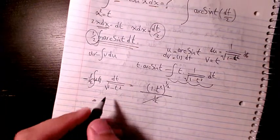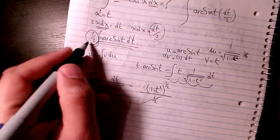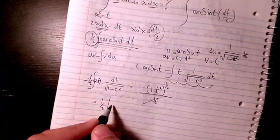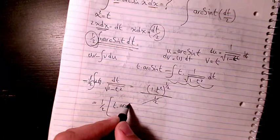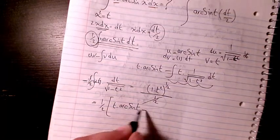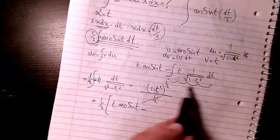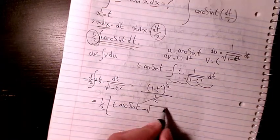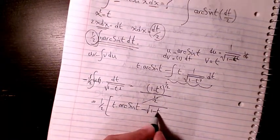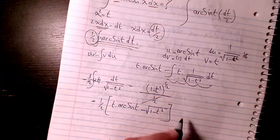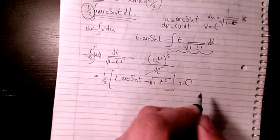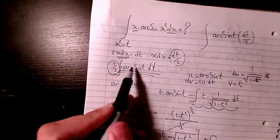So then it's going to be 1 over 2. It's going to be t times arcsin(t) minus, and the answer to this part was square root of 1 minus t² plus c. And we know t is x².